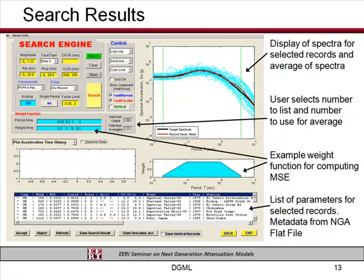Then you specify how many records you want to look for. For instance, if you're developing a set of records for non-linear analysis and you want to pick seven records, you might want to look at more than just seven. So you specify the total number to look for and then how many you want to use to compute an average of the ones selected. It then goes into the database, searches through a table of response spectra computed for all time histories in the NGA database, finds all records from the metadata that fit within your specified criteria, plots all their response spectra as light blue lines, and shows you the average of the seven best records — best being those with the lowest mean squared error. That information is printed in a table below.